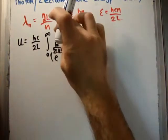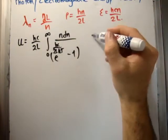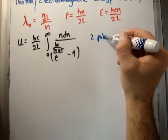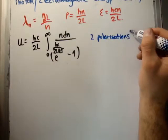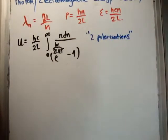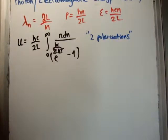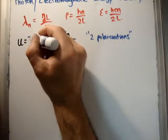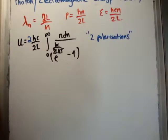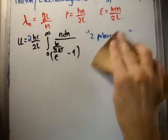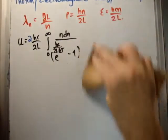One more thing we need to assume: photons have two polarizations. Just accept for the moment that waves can have transverse and longitudinal polarization, so we add a factor of 2 for that reason — similarly to how electrons have two spin states and we add a factor of 2 in the electron density of states.